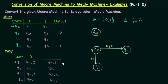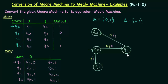Now let's come to Q1. Q1 on input 0 goes to Q3. Q1 will go to Q3 on input 0, and what is the output that it gives? The output it gives is 1. And then on input 1, where does Q1 go? Q1 goes to Q2 on input 1, and the output it gives is also 1. So we have completed Q1.